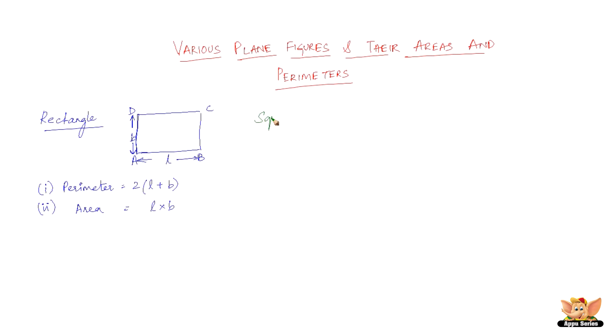Now let us go to the next plane figure which is square. So let us consider this square ABCD. Square is a closed figure in which all four sides are equal, so one side is a and the rest are also a. Perimeter of a square would simply be 4a because all four sides are equal. You can either do a+a+a+a or just multiply a by 4 because it's got four equal sides.